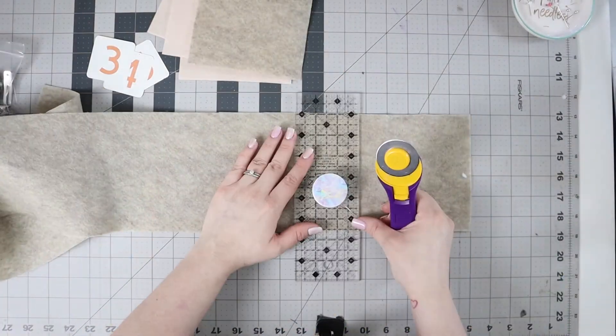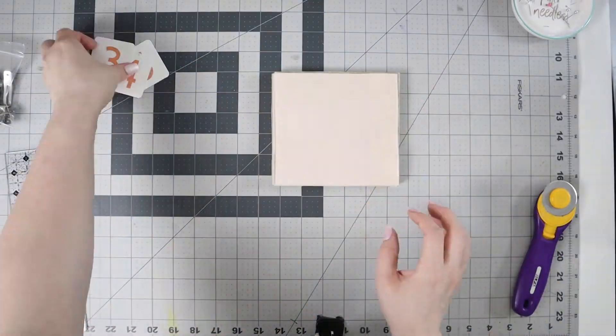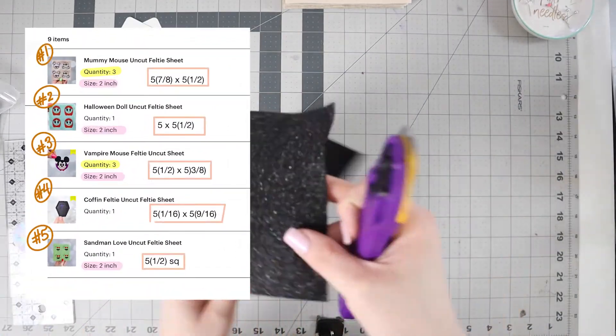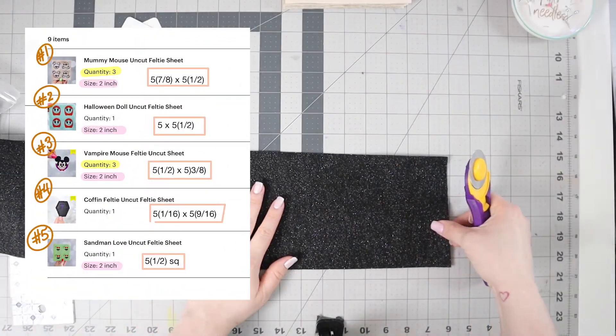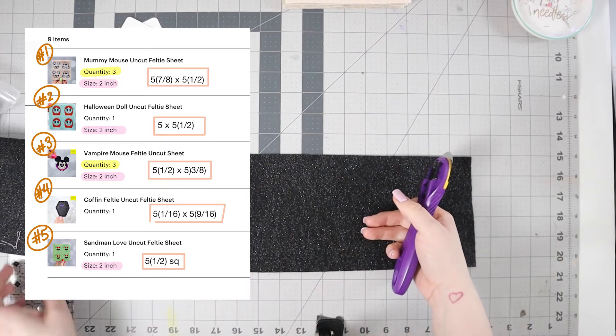If you're wondering how I know exactly what dimensions to cut all these felty sheets out at, I actually have them written down in my GoodNotes notebook so I know exactly what dimensions to cut every single one of the numbers within this order.